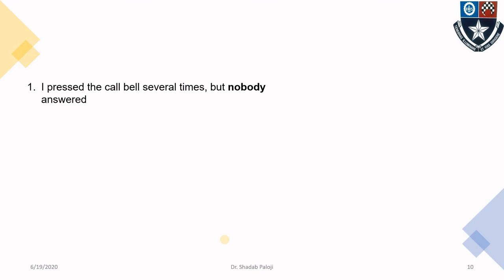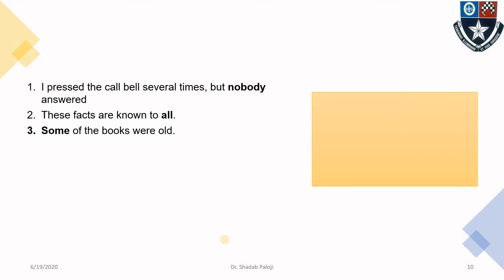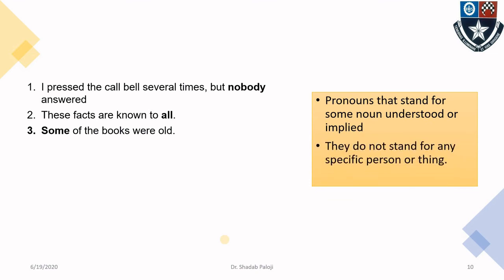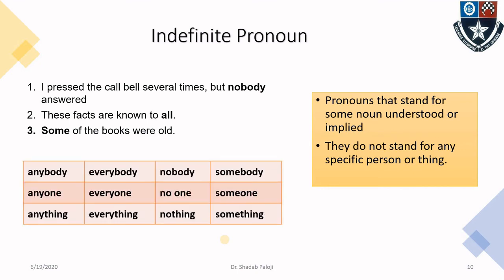'I pressed the call bell several times but nobody answered.' Notice the word 'nobody.' 'These facts are known to all.' 'Some of the books were old.' Nobody, all, some — these are terms used for people or non-living things. These are pronouns that stand for some noun which is implied or understood. They do not stand for a specific person or thing. Such are the indefinite pronouns — we are not sure about who it is. Some examples: everybody, nobody, anybody, somebody, no one, nothing. It could be either too many or only one, but not specific.